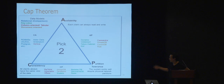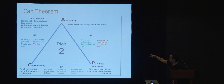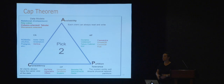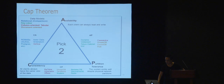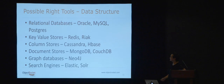This is the common CAP theorem diagram. You have availability, consistency, and partition tolerance. You want the big two — the two most important to you. Consistency and availability is where a lot of databases fall. Partition tolerance — being able to age out data or put it somewhere — sits right in the middle. Everyone has their opinion on what works best. That takes us to the right tool for each data structure.